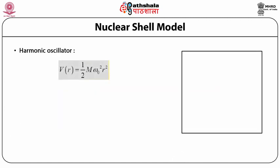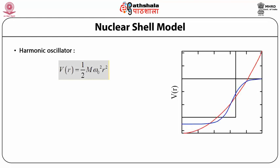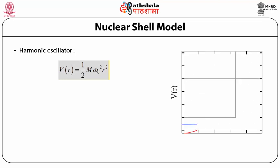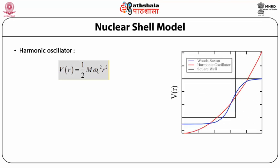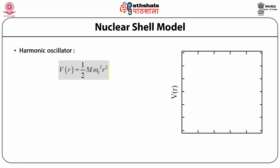Nuclear Shell Model. We continue our discussion about the nuclear shell model. In the nuclear shell model, basically three nuclear potentials have been assumed: the harmonic oscillator potential, the square well potential, and the Woods-Saxon potential.